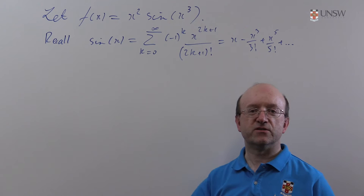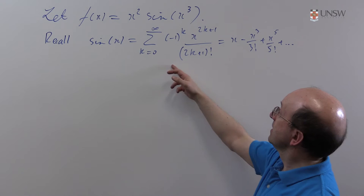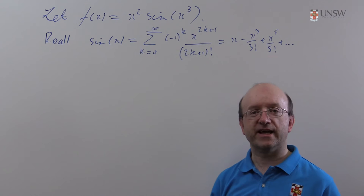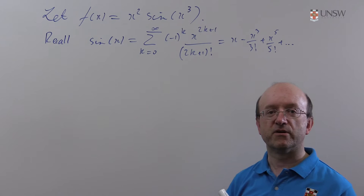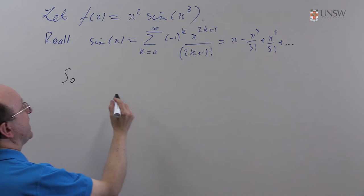Now the first stage of this problem is really very straightforward because with power series you just need to do substitution. They're very robust, you can just treat them like infinite polynomials. So I'll take the known series for sine and substitute x³ for x, and then multiply by x² to get the series for the function I've got here.